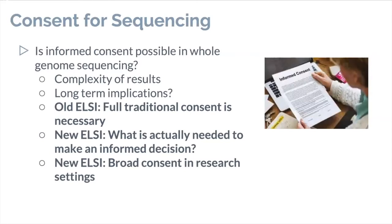Consent is another area that's rapidly evolving. One question is: is informed consent ever possible in things like whole genome sequencing, given the high complexity of results and potential long-term implications? The old ELSI was very much around requiring traditional, full informed consent. That's also changing — the ELSI community now talks more about what families need to make informed decisions, and it may be that we don't need a 700-page consent form. We want to give families the information they need while still fulfilling our obligations, without overwhelming them.